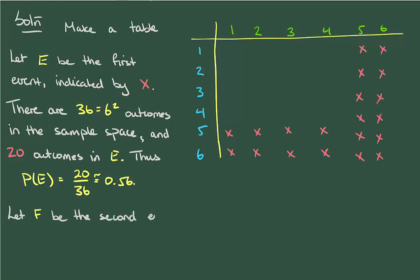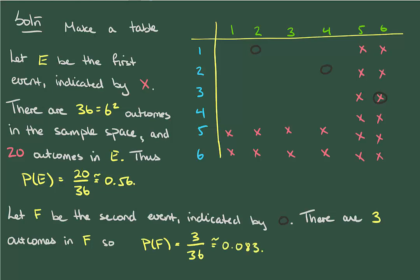For the other event, let's write it down, let's indicate it by F, and I'm going to indicate it in the table by a black circle, and we're just finding where the green number is twice as much as the blue number. This happens exactly three times, so the probability of the event F is 3 over 36, which works out to about 8.3%.